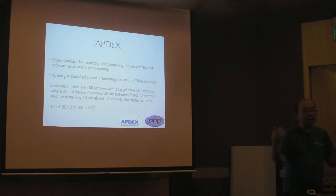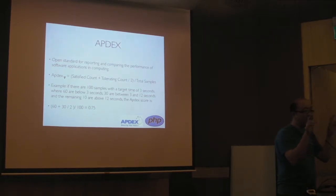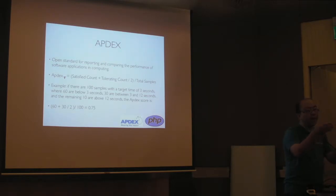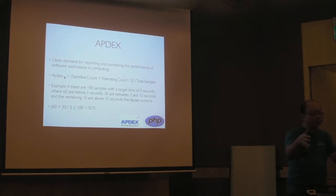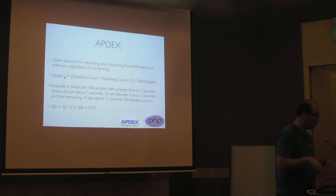Basically, Apdex is a formula. Based on the number of requests that you can sample, you set yourself a target timing — say, half a second response time per page. That's 0.5, your target time. You take a sample of requests; those fulfilled within half a second are the satisfied count. The tolerating count is a multiple of four, so two seconds. You add the satisfied count plus tolerating count divided by two, then divide by the total number of samples. For example, with 100 sample requests: 60 fulfilled within target, 30 within two seconds, and the rest dropped off — not satisfied. You then calculate the formula.